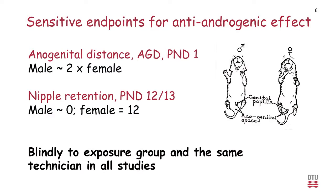Anogenital distance is the difference in the distance between the anus and genitals in male versus female offspring — it's actually used for sexing the animals at birth, and this difference exists due to testosterone action during development. Nipple retention is an equally sensitive endpoint: male rats are supposed to have no nipples, while female rats have 12. Males start to develop 12 nipples, but these are regressed due to testosterone. So if exposed male rats have nipples, that indicates insufficient testosterone during development.